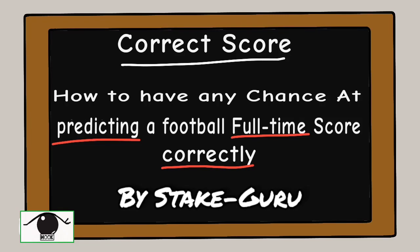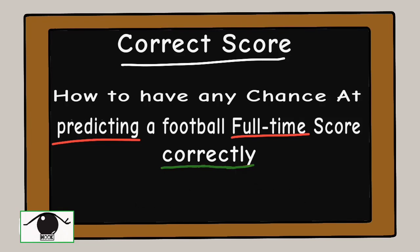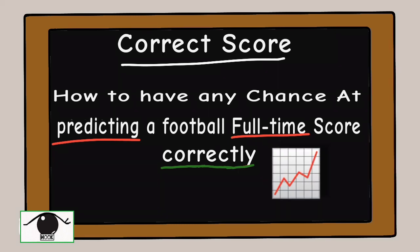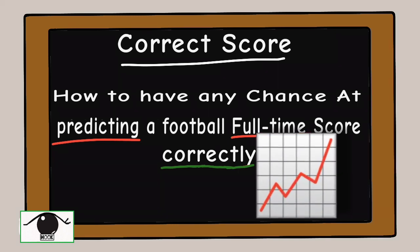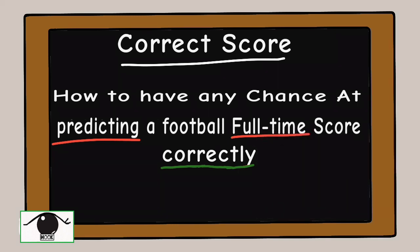Gambling on the correct score betting option is very difficult. But to have a chance at predicting a football match rightly, or to increase your possibility of winning a correct score bet, you have to follow these three steps.